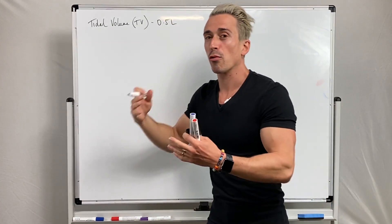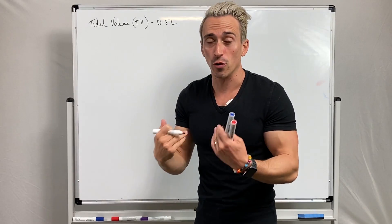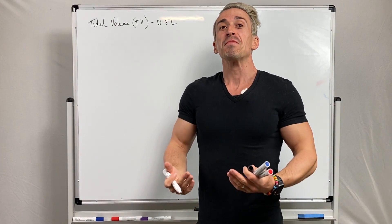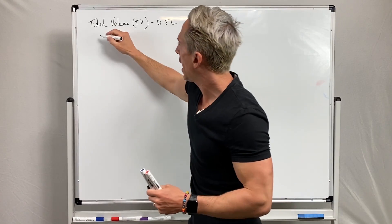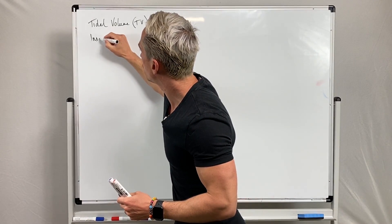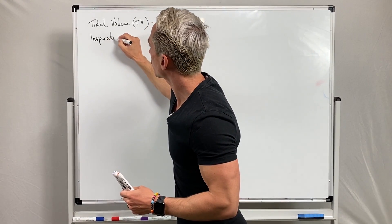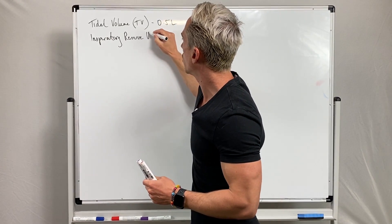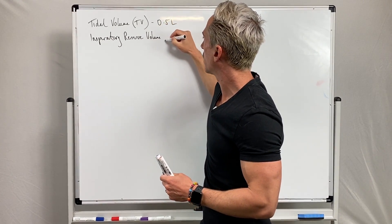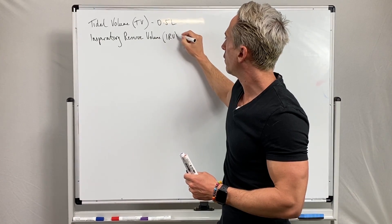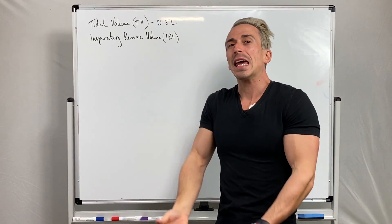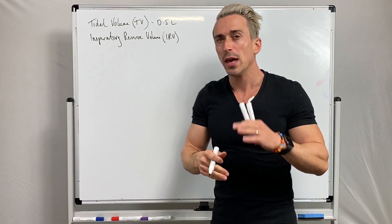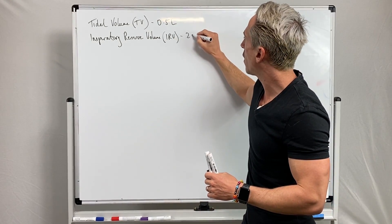We can bring air in on top of that tidal volume, and that's our inspiratory reserve volume, or IRV. That forceful inhalation or inspiration of air on top of the tidal volume is around about 2.5 litres. These values I'm giving you are for a healthy male, 70 kilos.